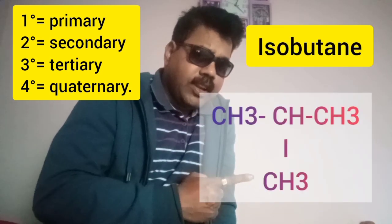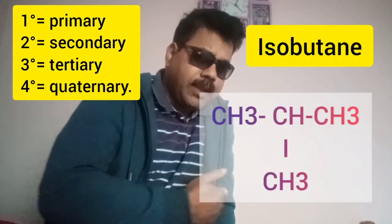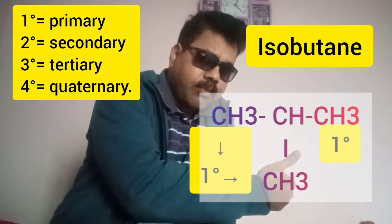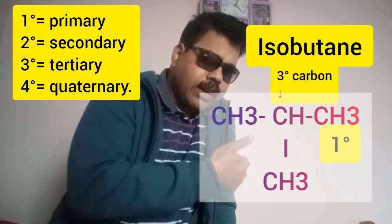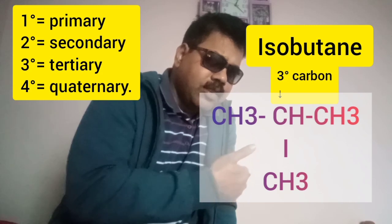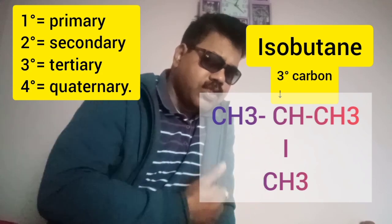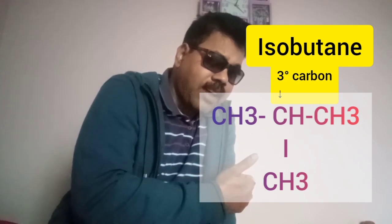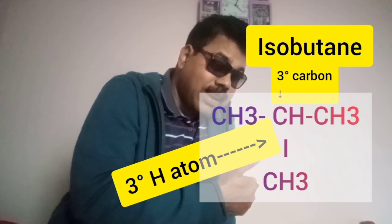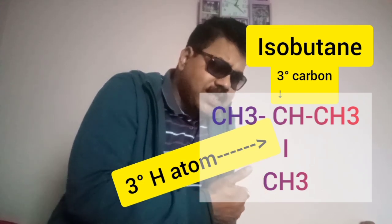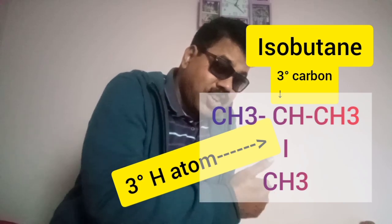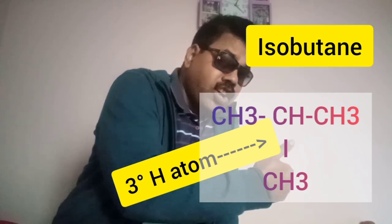In case of isobutane, you will find two types of carbon atoms. There are three primary carbon atoms, and in the middle you will find a tertiary carbon, because that carbon in the middle is connected to three carbon atoms on three different sides. That is a tertiary carbon, and the hydrogen atom attached to that tertiary carbon atom is a tertiary hydrogen atom. If you remove a tertiary hydrogen atom from that tertiary carbon, you will be getting tert-butyl: CH3-C bond-CH3-CH3. That is tert-butyl.